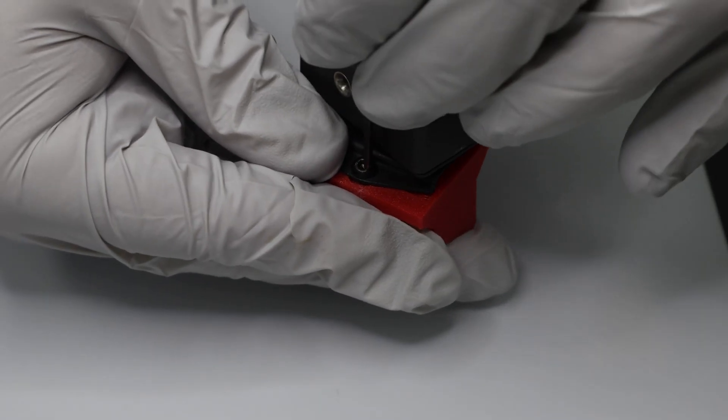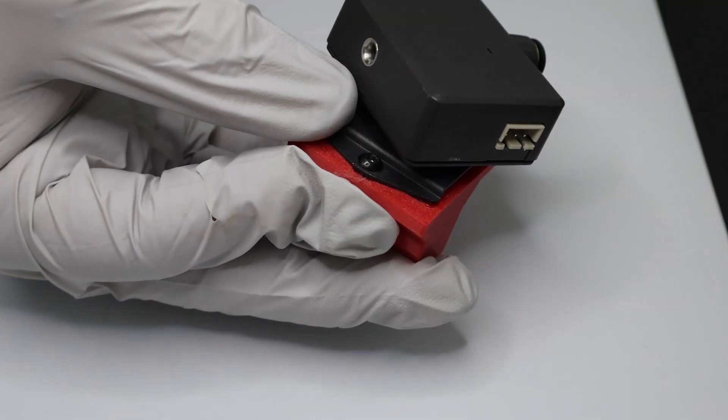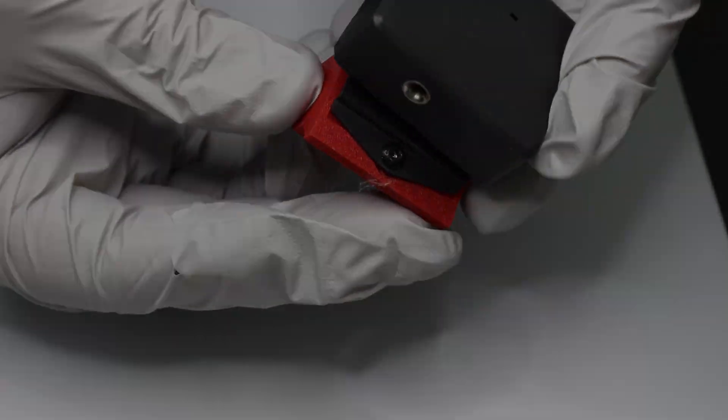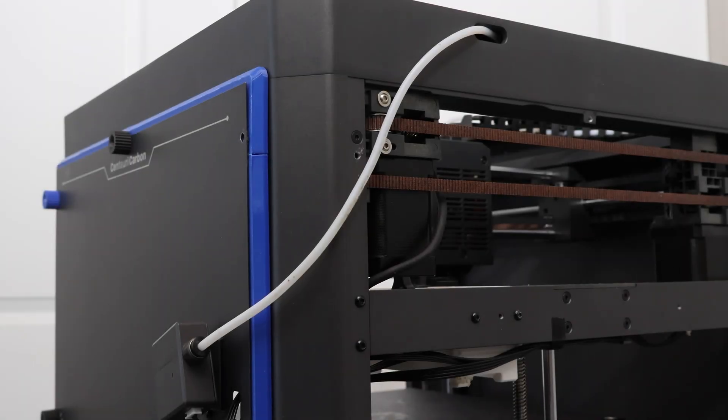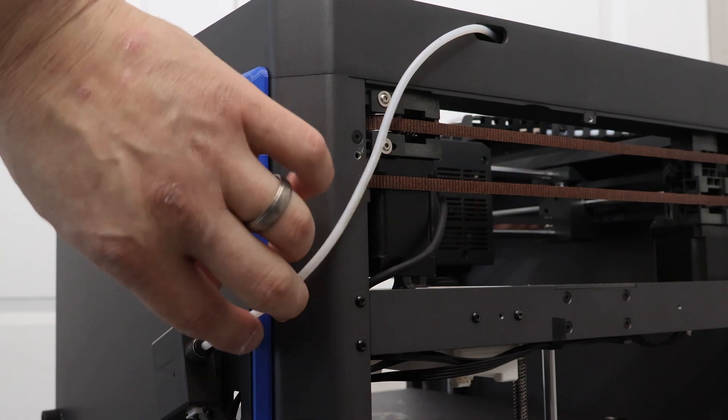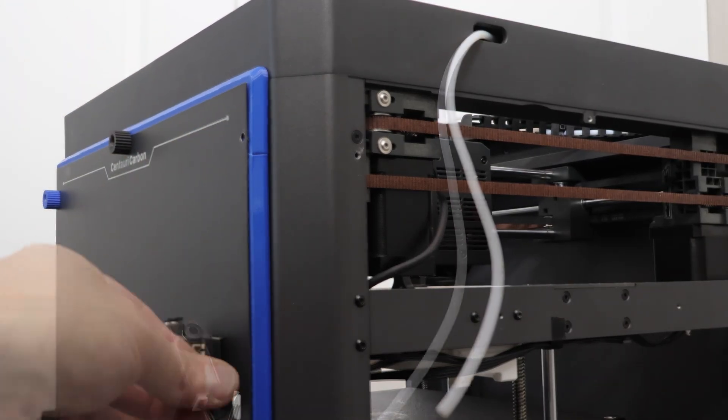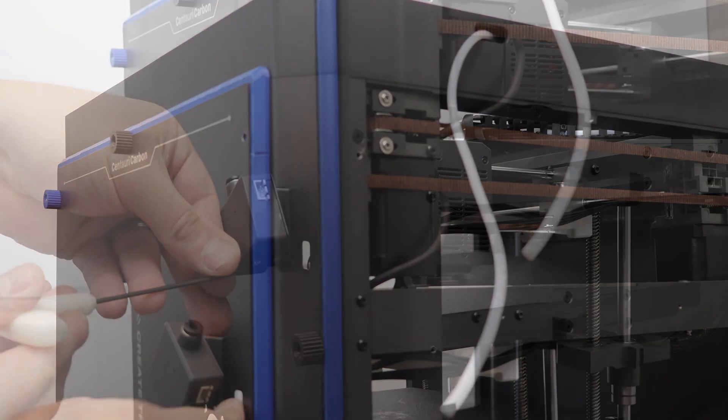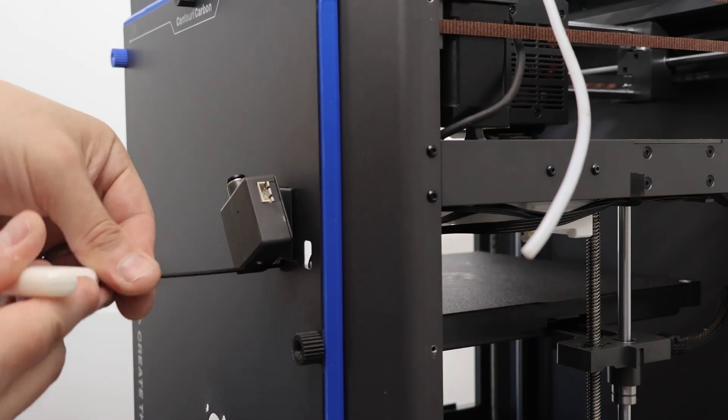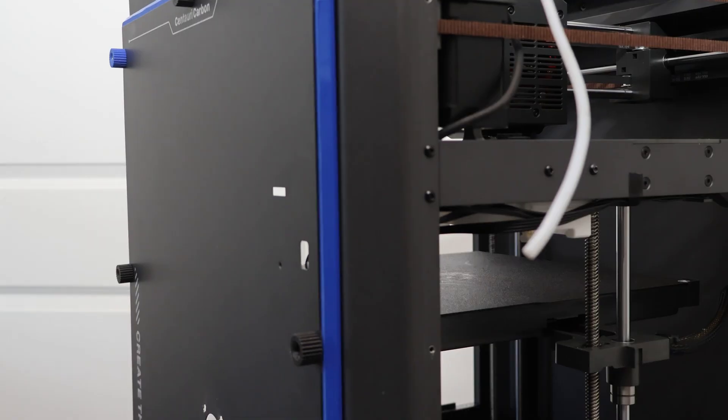Slightly out of sequence here, but we are going to remove the sensor. You push in on the black part and pull the PTFE out. It's pretty simple. Of course, disconnect the wire and remove the single screw. It's fairly straightforward.